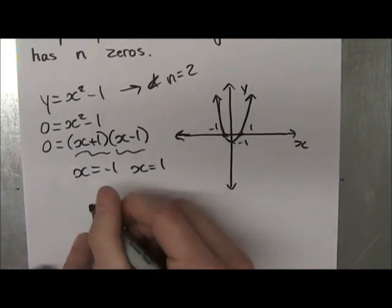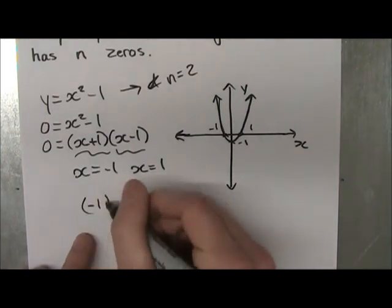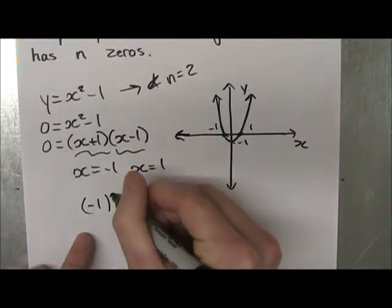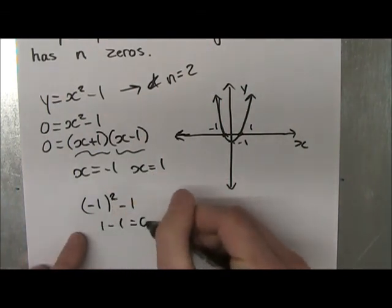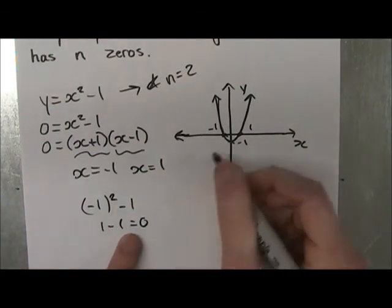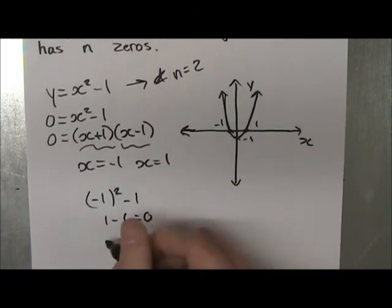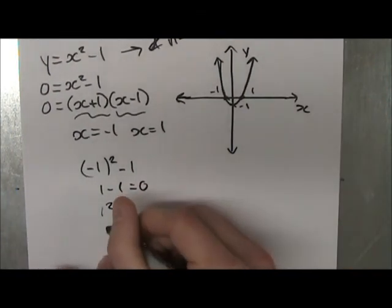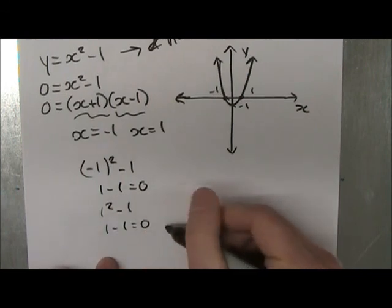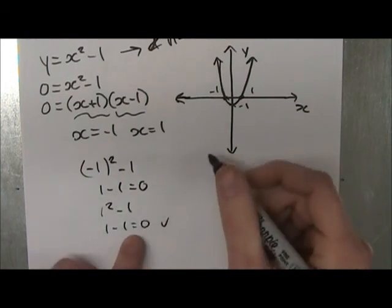And when we plug these in, minus 1 to our function here, minus 1, we get 1 minus 1 is equal to 0. So y would be equal to 0, so it is a zero. And then we plug in the 1, 1 squared minus 1, you get 1 minus 1, 1 minus 1 is equal to 0. So this is also a zero.